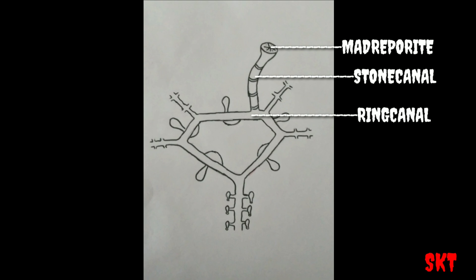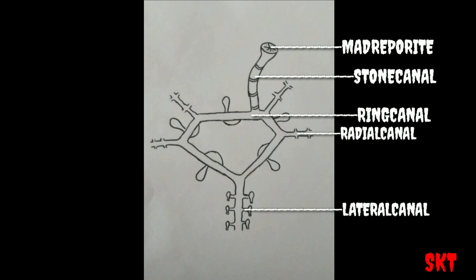The five-sided ring canal gives rise to five arm-like structures called radial canals. This radial canal gives out two series of short branches called lateral canals. These lateral canals are just connecting branches between radial canal and tube feet. These tube feet are many in numbers. These are just elastic sac-like structures. We shall study about this separately at the end.